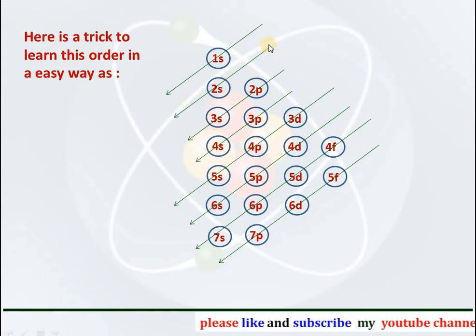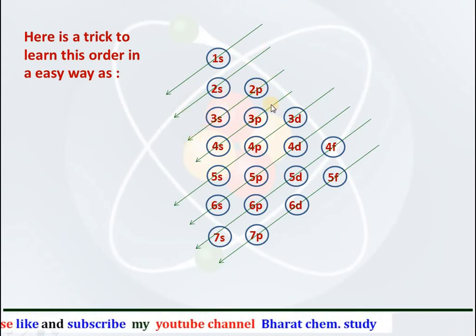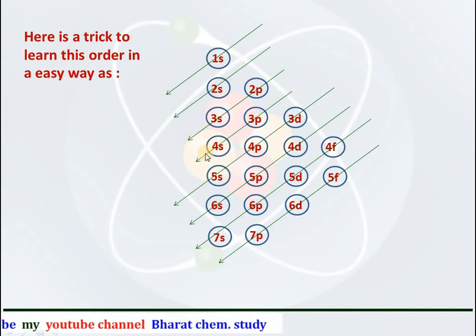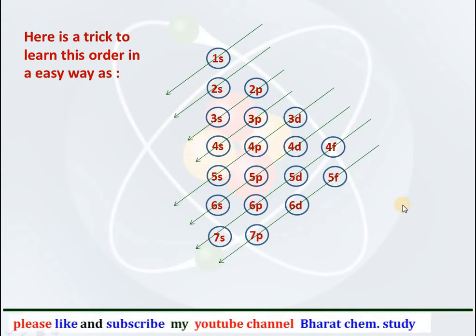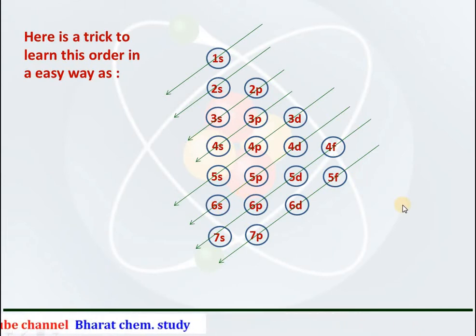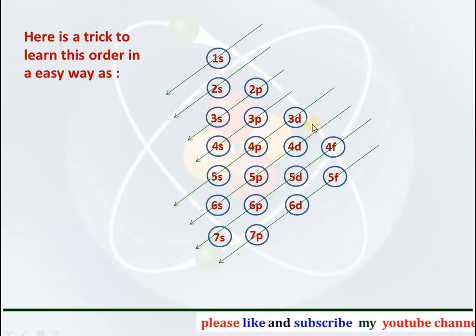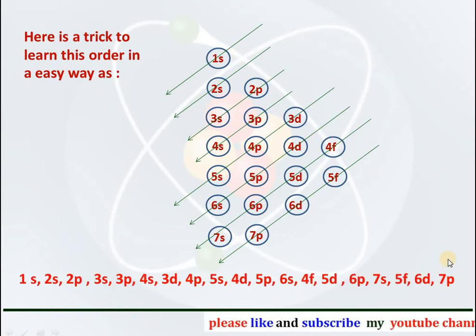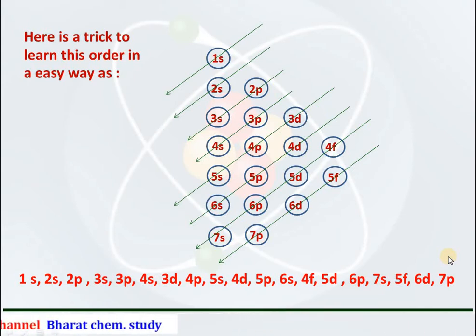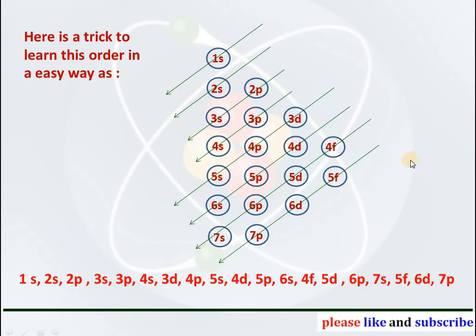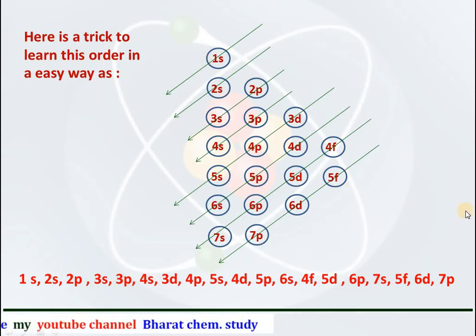So the correct order becomes: 1s, 2s, 2p, 3s, 3p, 4s, 3d, 4p, 5s, 4d, 5p, 6s. In our study up to class plus two, we are basically going to study the electronic configuration up to 3d only, and the electronic configuration can also be written as 1s, 2s, 2p, 3s, 3p, 4s, 3d, etc. But this diagonal method is the easiest way to learn for beginners in plus one class.